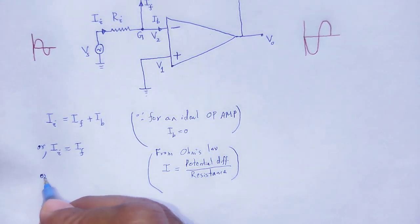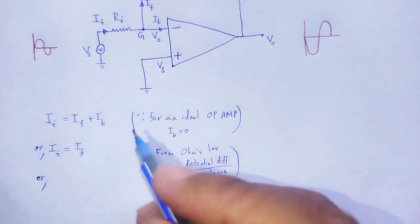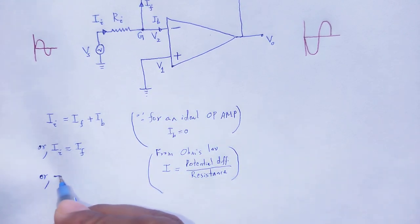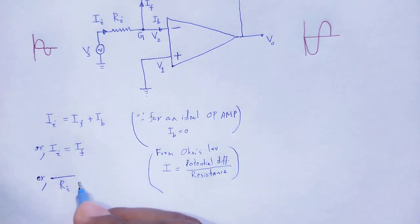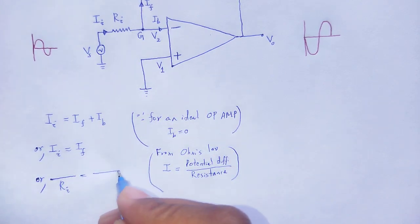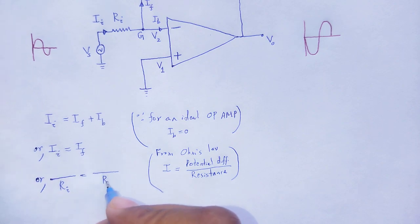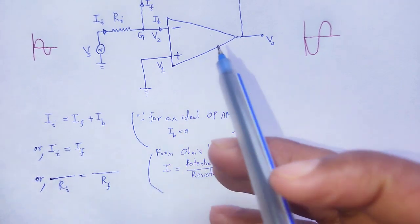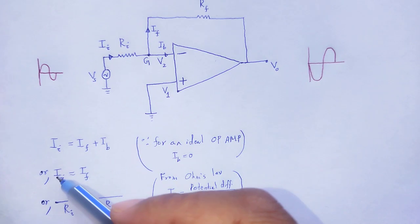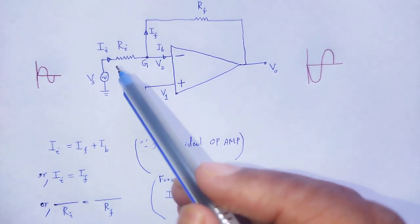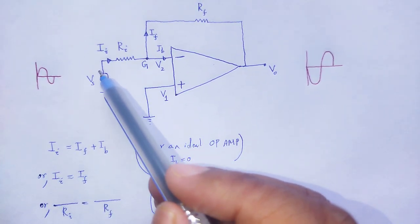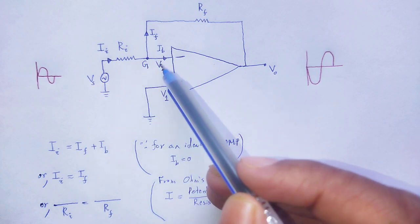For Ii, here the resistance is Ri. Next, for If, here the resistance is Rf. Now for Ii, current flows from the potential Vs to V2.